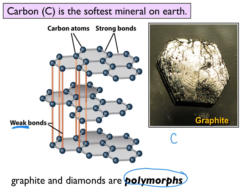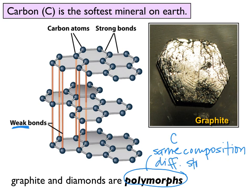Therefore, graphite and diamond are considered polymorphs. A polymorph is a mineral that has the same composition — in this case, just the element carbon — but a different atomic structure. I'm going to leave it there with this definition of polymorphs, and I will see you guys for the next video lecture. Don't forget to go to Canvas and take that quiz.